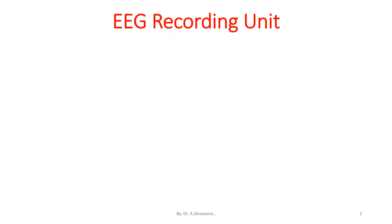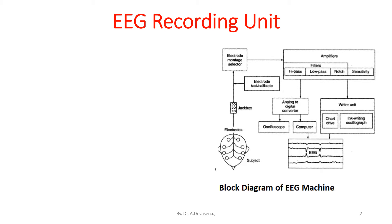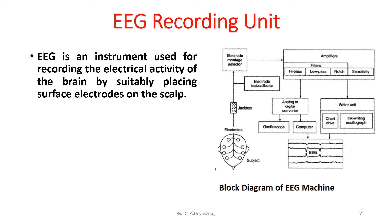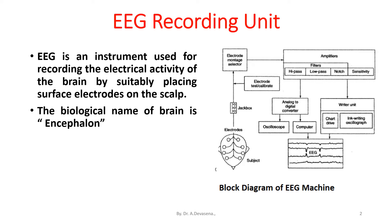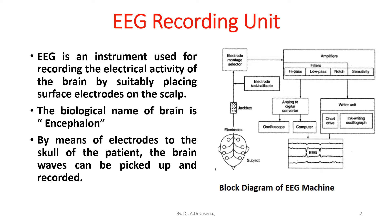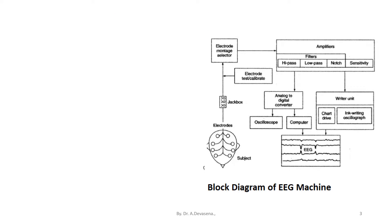EEG recording unit. Here is a representation of the block diagram of EEG machine. EEG is an instrument used for recording the electrical activity of the brain by suitably placing surface electrodes on the scalp. The biological name of brain is encephalon. By means of electrodes to the skull of a patient, the brain waves can be picked up and recorded. On the surface of the brain, the voltage is about 10 millivolts.